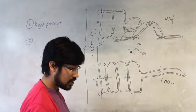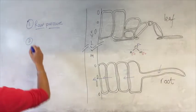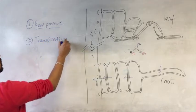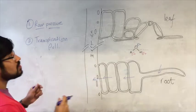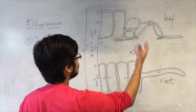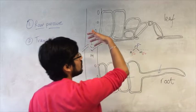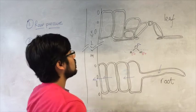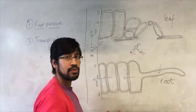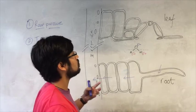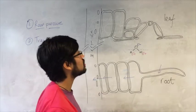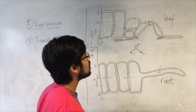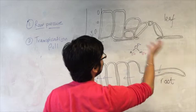The second mechanism is called the transpiration pull. Transpiration refers to the loss of water from the leaf structures. The leaves are going to be exposed to light and likely high temperatures — that's good for photosynthesis — but at the same time, you're going to be losing water through the leaf.